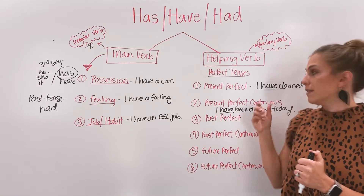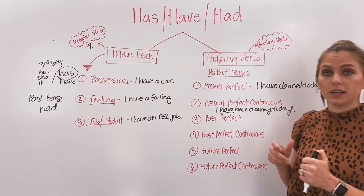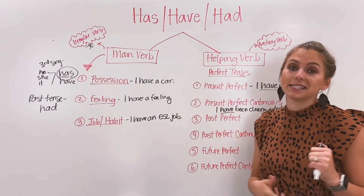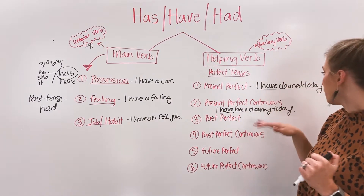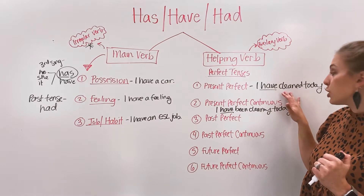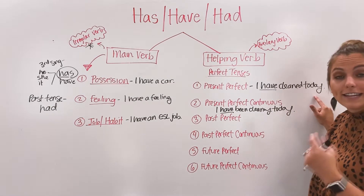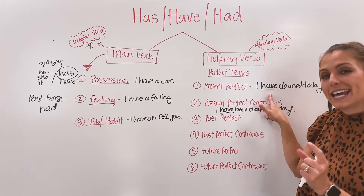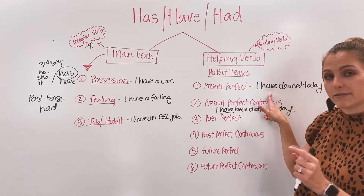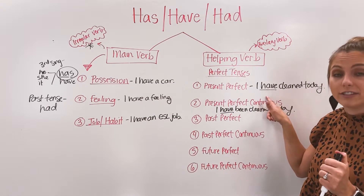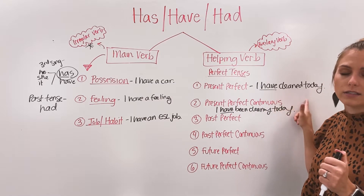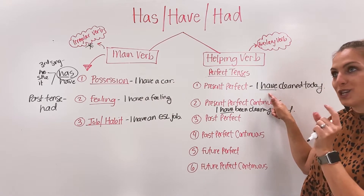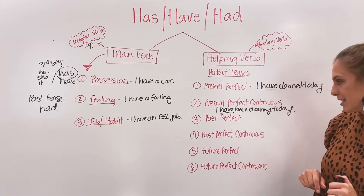Have is also the verb that takes the negative. If I wanted to make a sentence negative, have will be the verb that takes the negative. For example, I would say: I haven't cleaned today. You contract have when you want to make it negative.